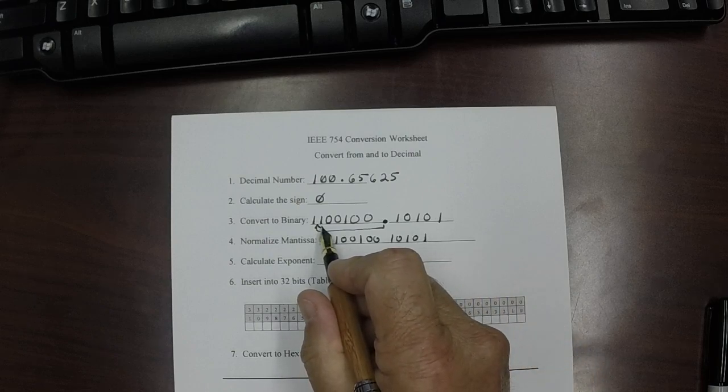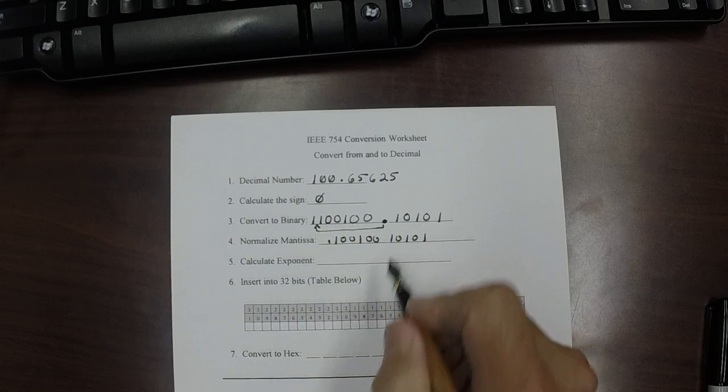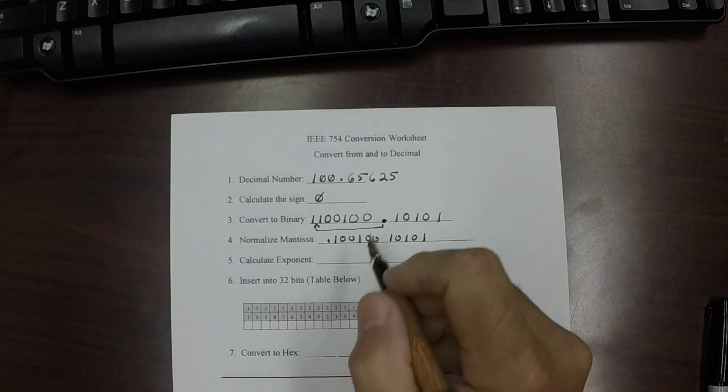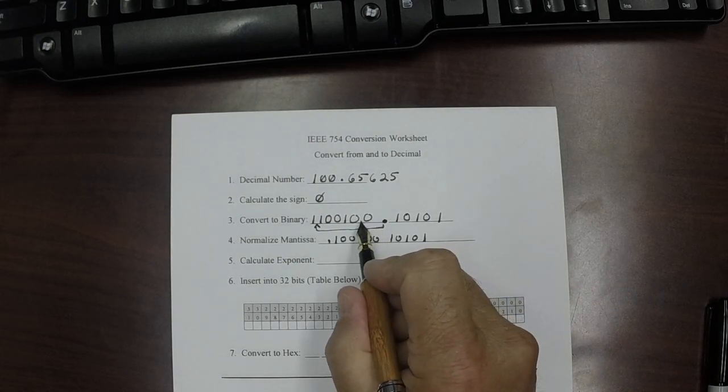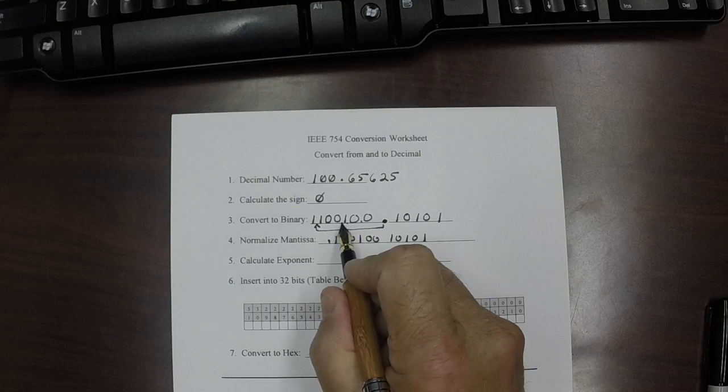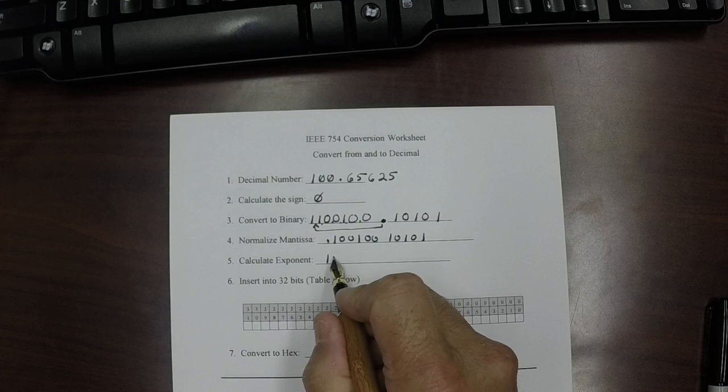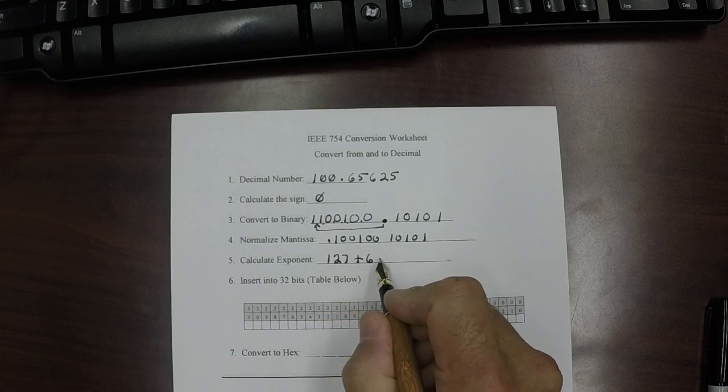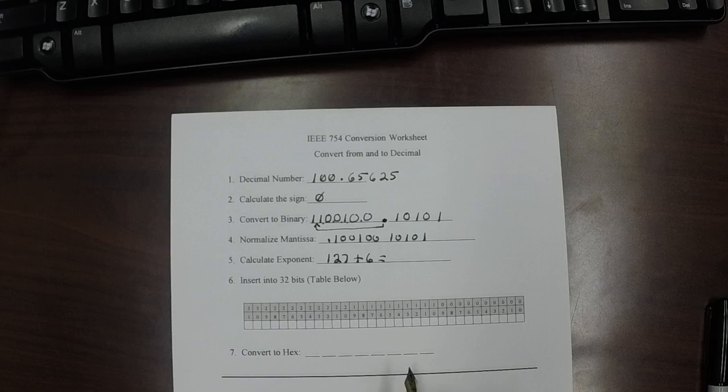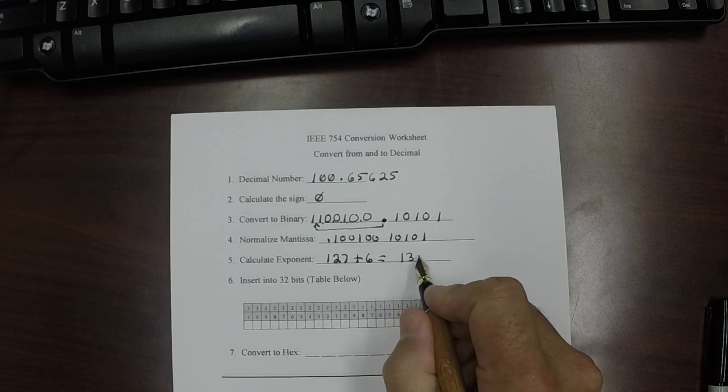And notice that we just copy everything from this over down to there. Now, how many places did we have to do that? Well, we had to do 1, 2, 3, 4, 5, 6 places. So, to calculate the exponent, we take 127, and we add 6, which comes up with the number of 133.